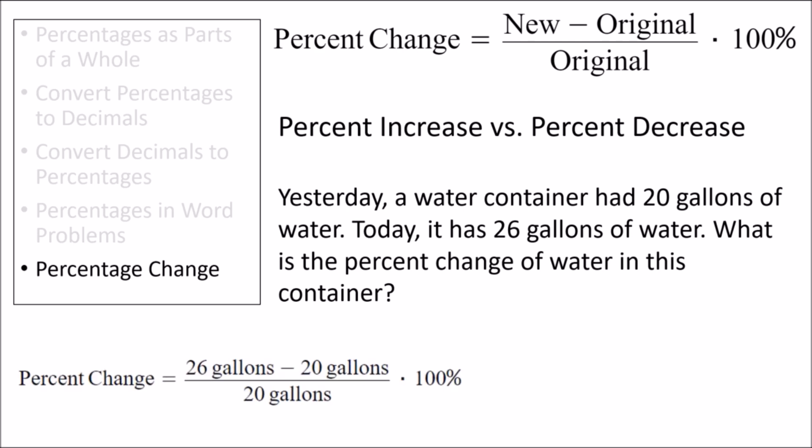For percent change questions, we should first identify the original value and the new value. Usually, we can use time to help us figure out which is which. In this question, the water gallon originally had 20 gallons, and then later it was changed so that it had 26 gallons.